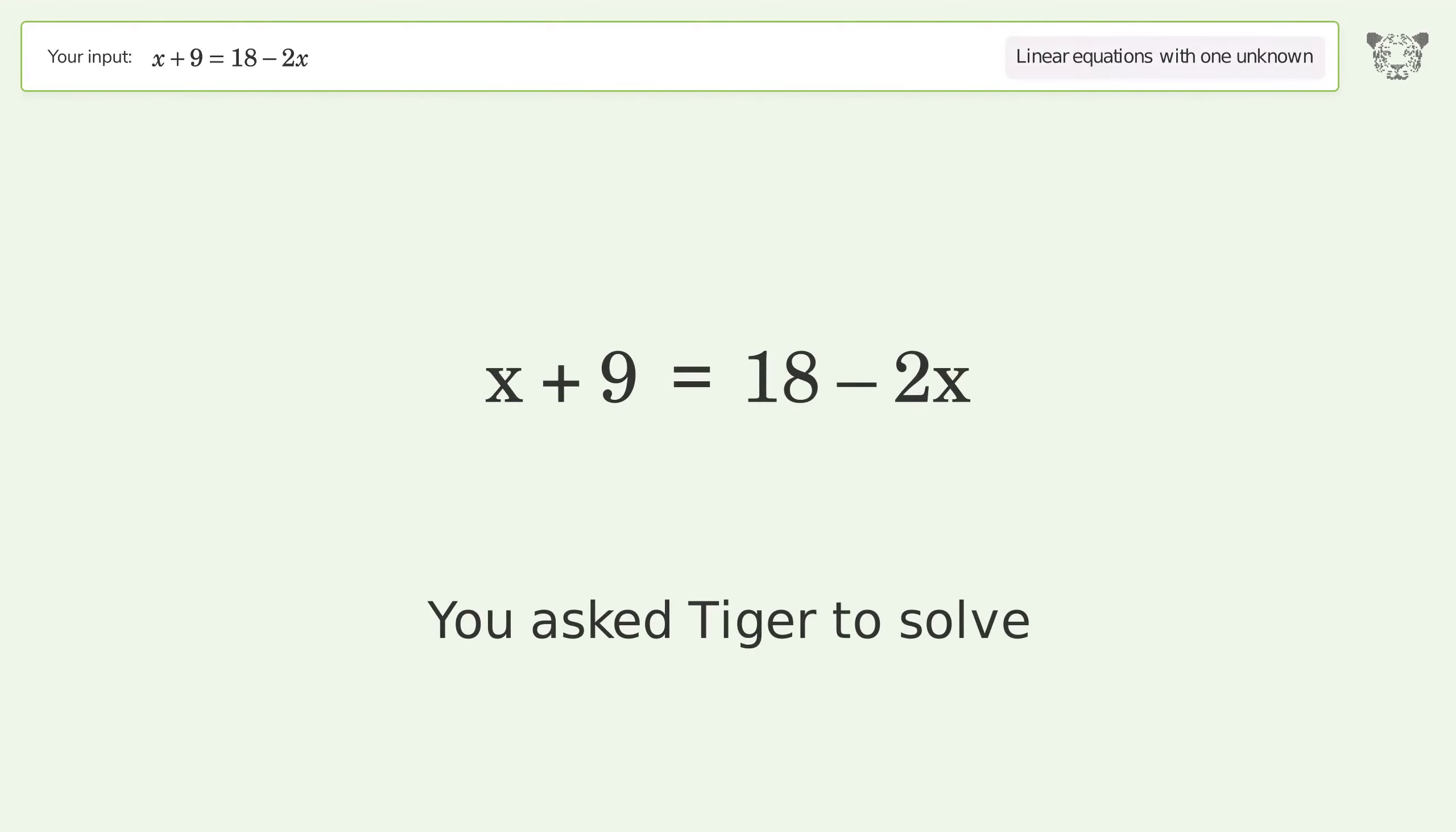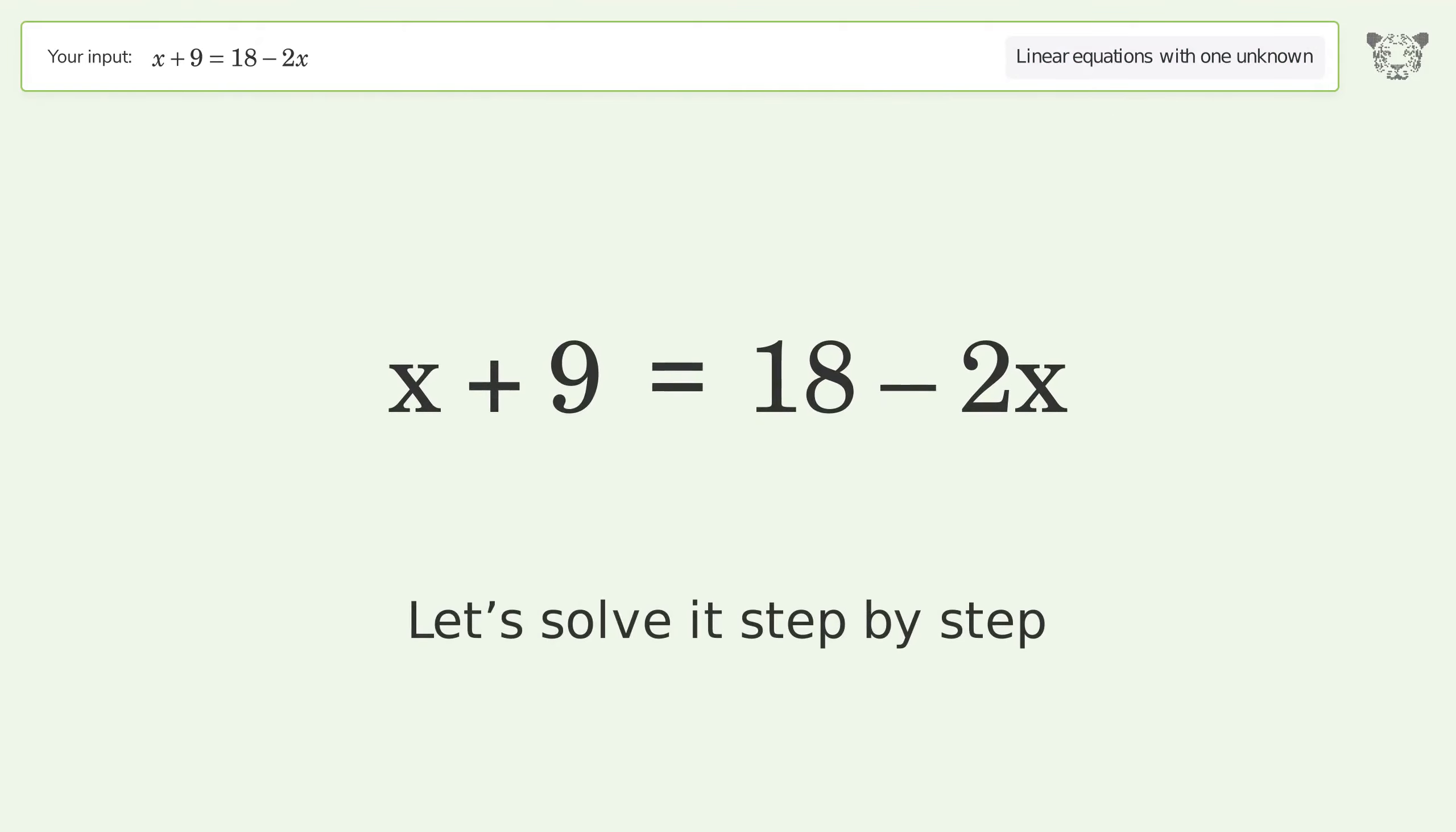You asked Tiger to solve. This deals with linear equations with one unknown. The final result is x equals 3. Let's solve it step by step.